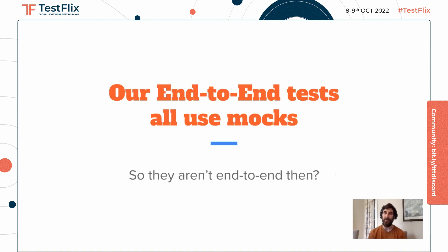Let me set the scene and tell you a little story about how I started a role. Someone says our end-to-end tests all use mocks, so they're running in the pipeline and they're really stable. And I'm like, that's great, but they're not fully end-to-end because they don't use the integrated services. So how can you have confidence when you deploy your software?